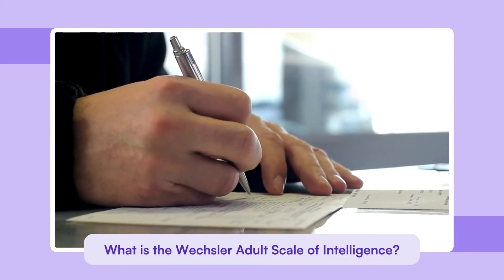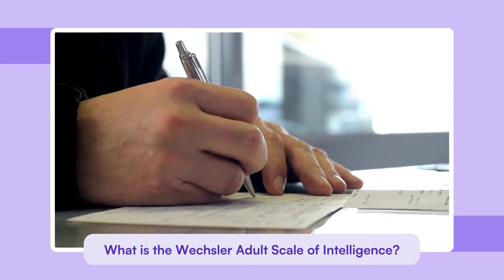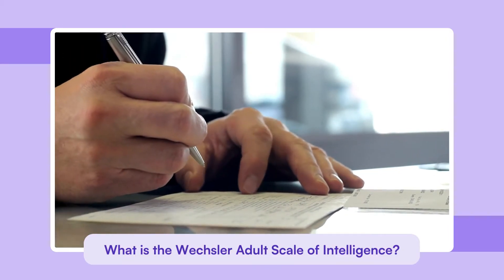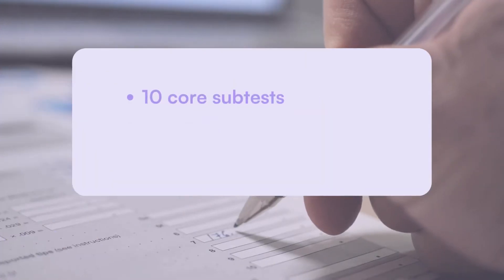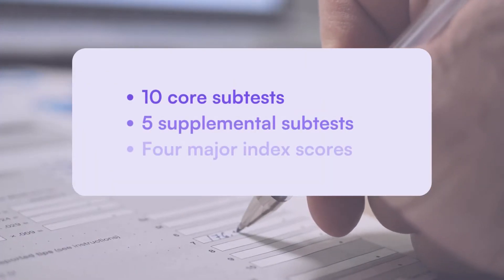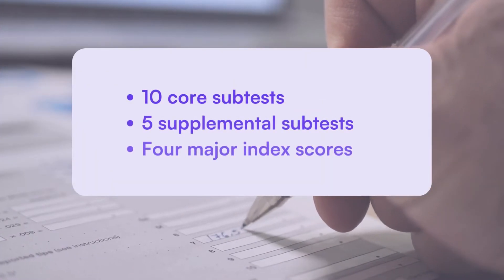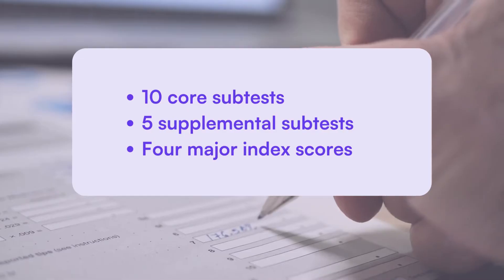The current version, the WAIS 4th edition, includes 10 core subtests and 5 supplemental subtests, divided into 4 major index scores.